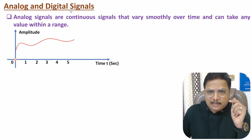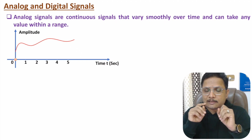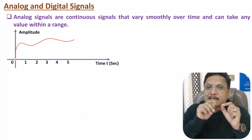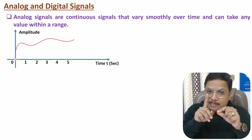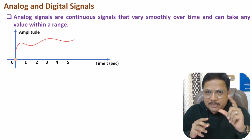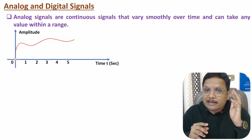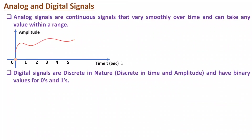Digital signals are discrete in nature. There can be a question in an interview about the difference between discrete time signals and digital signals. In discrete time signals, we have amplitude at discrete time intervals, but the amplitude itself is not necessarily discrete. In digital signals, we have amplitude at discrete time intervals and that amplitude will also be discrete in nature.